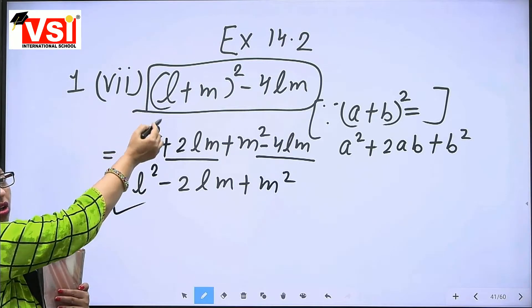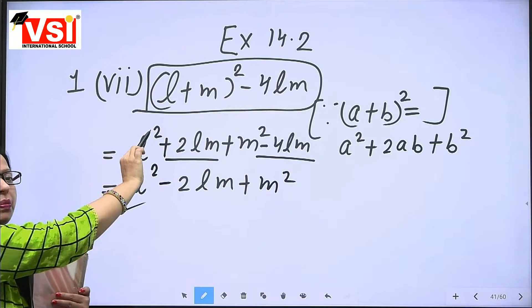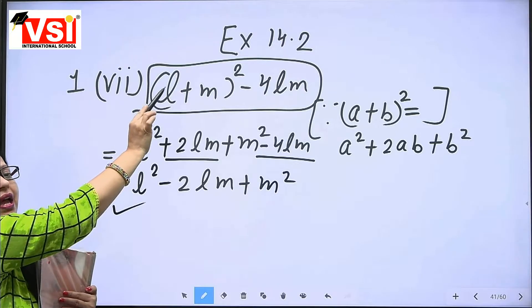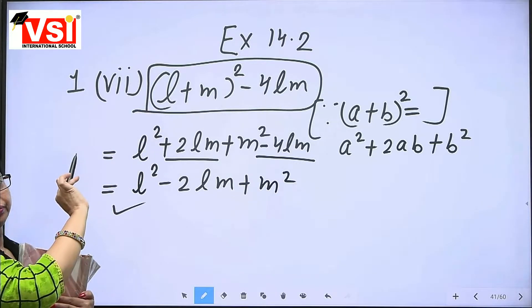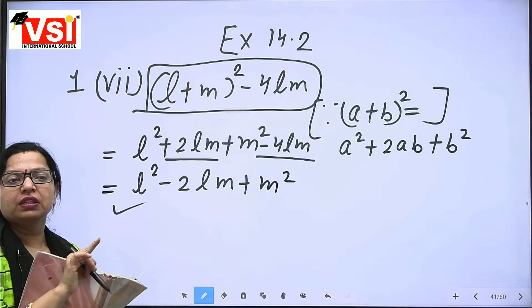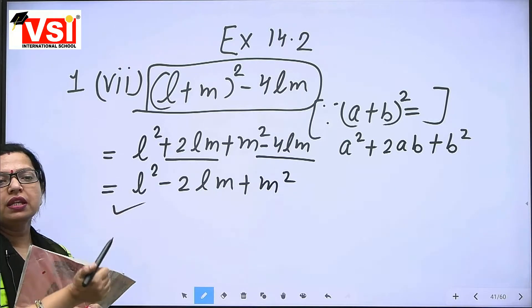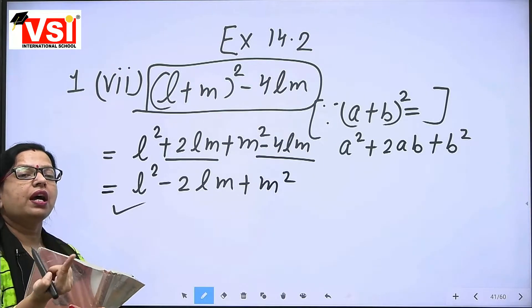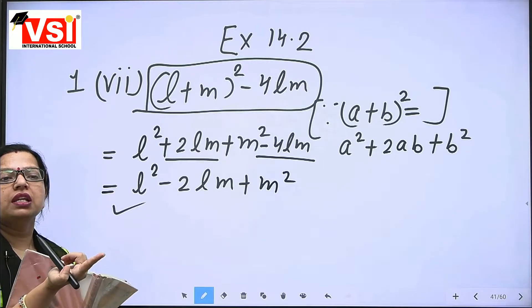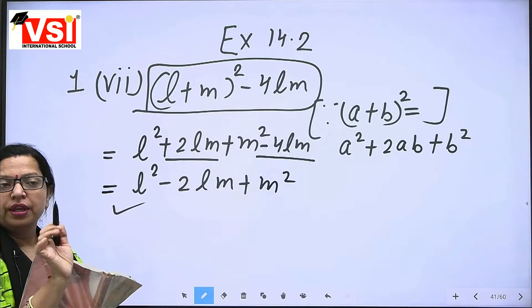You made a late entry, so understand it again from the start. L plus M whole square is given here. For factorization, we cannot directly make factors of this — we need to use identities to make the factors of these terms.